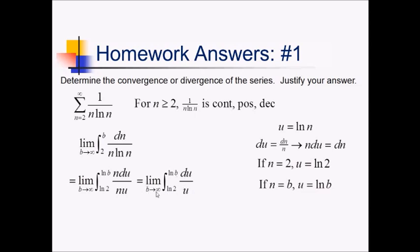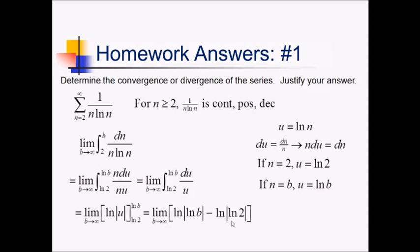b is still approaching infinity — we can't lose that limit. So this is ln|ln(b)| minus ln(ln(2)). As b approaches infinity, we don't really care about this other ln term, because this first one is growing to infinity no matter how many times you ln this thing. Since my integral diverges, then by the integral test, this series also diverges.